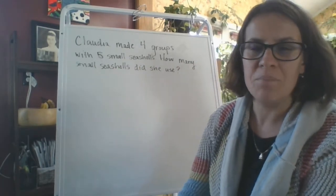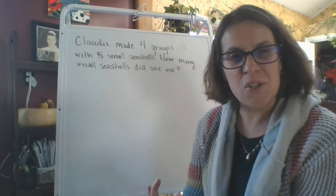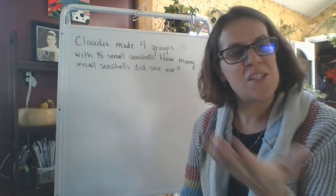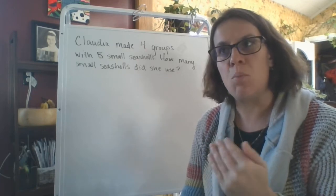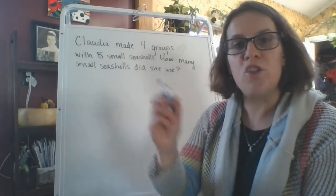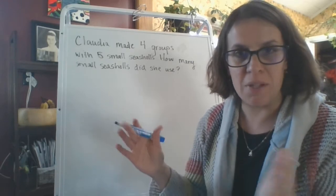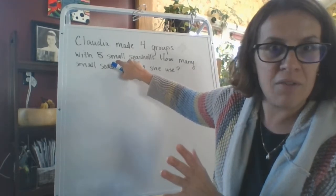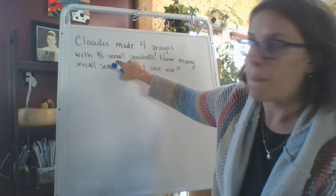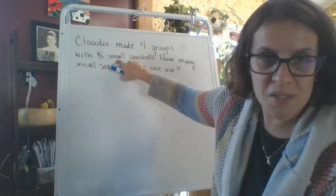How many small shells did she use? So it's kind of throwing you off a little bit by talking about the size of the shells. But really when it's talking about the sizes, it just is asking you to be more specific when you're writing out your answer and labeling it. So if I was going to label it, I'm going to label it however many I find out she has with small seashells.